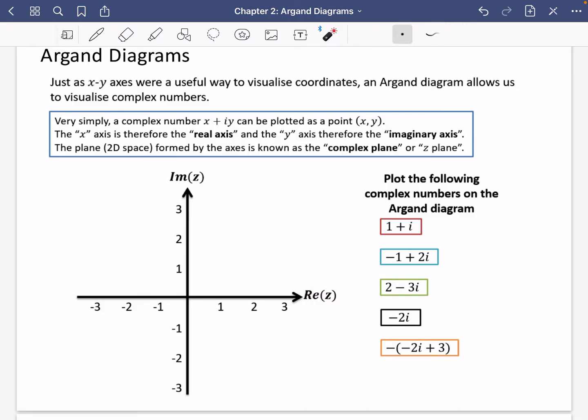So let's just quickly read what I've written. It says a complex number x plus iy can be plotted as a point (x, y). So we can take a complex number and make it become a coordinate. The x-axis becomes the real axis and the y-axis is the imaginary axis. The plane or 2D space formed by the axes is known as the complex plane or z-plane. Just remember, the real axis comes before the imaginary axis, a bit like x comes before y, because when we write these numbers, we always have the real part, then the imaginary part in that order.